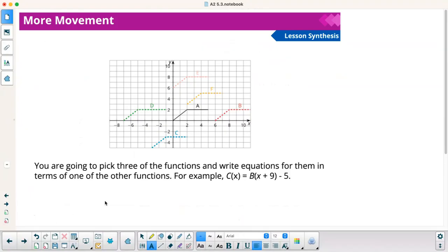All right. So our synthesis, you're going to pick three of the functions, the right equations for them, in terms of one of the other functions. So they did C. Well, no, that's not C. Oh, I see. Yeah, it is C. So they did C in terms of B. So they said, to get to C from B, we go left nine and then down five. So that's what they did here. They said, if this is B. So to get to C, I'd have to take B left nine down five.